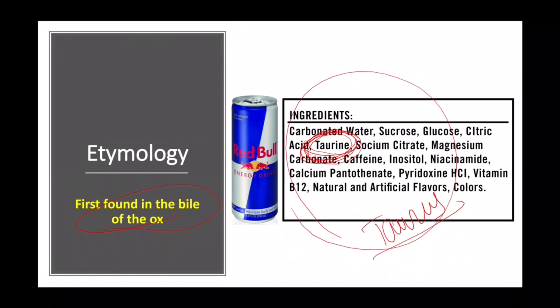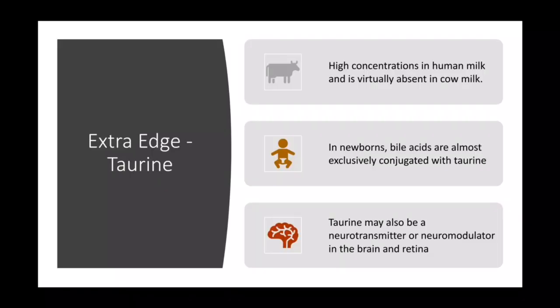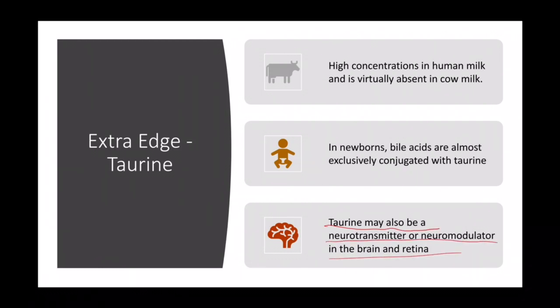Beyond bile acid conjugation, taurine may also act as a neurotransmitter or neuromodulator in the brain and retina.